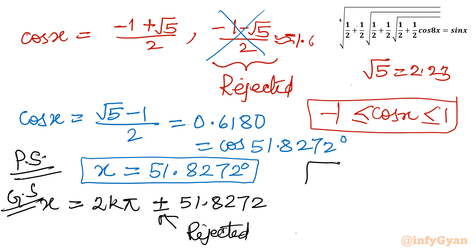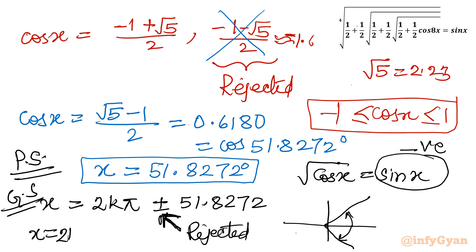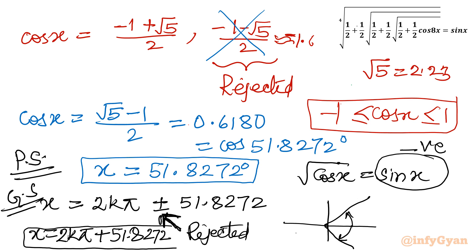The minus sign suggests the 4th quadrant — at −51.8272°, sin x would be negative. Since our equation was √cos x = sin x and the left-hand side (square root) is always positive, the right-hand side must also be positive. So the 4th quadrant gives an extraneous solution and is rejected. The final general solution is x = 2kπ + 51.8272°, where k belongs to the integers.